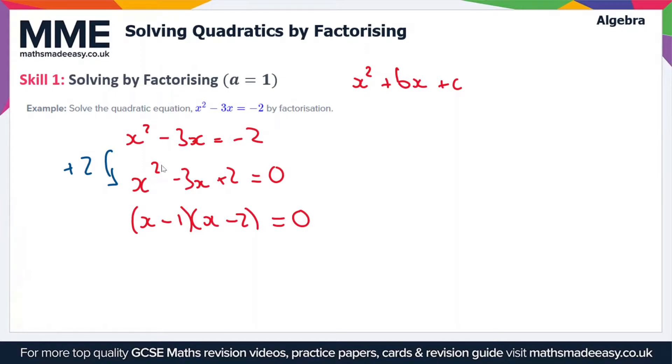Now comes the solving part. In order for this expression to equal 0, at least one bracket has to equal 0, because when you multiply anything by 0 you get 0. If we take the first bracket, x minus 1 equals 0, then x equals 1.